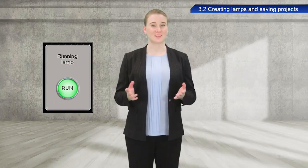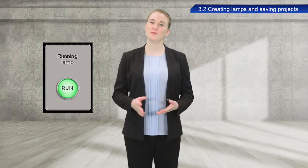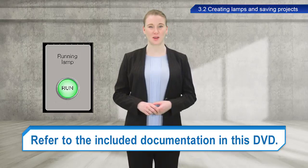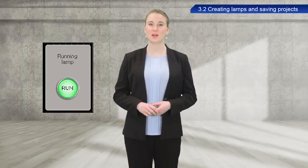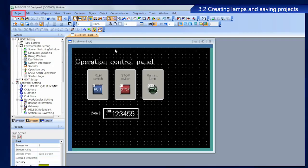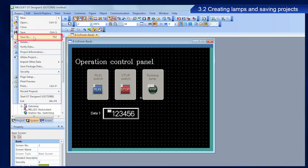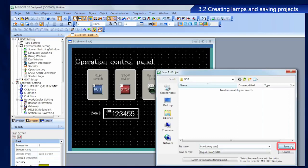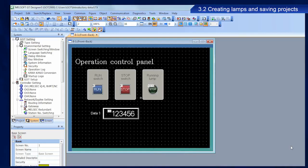This completes the configuration of the running lamp. Refer to the included documentation for more information on creating other types of objects. Next, I will describe the procedure to save projects. From the menu bar, select Project, and then Save As. Enter a file name, and then click Save. The project is now saved.